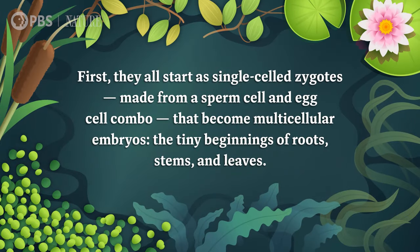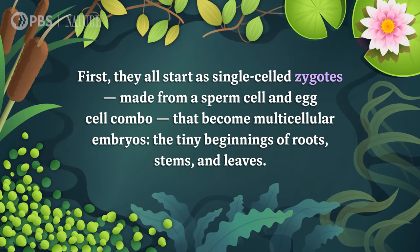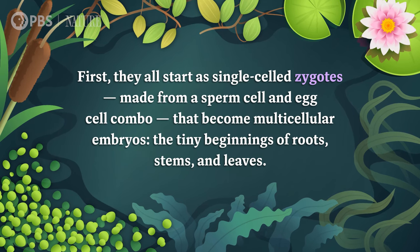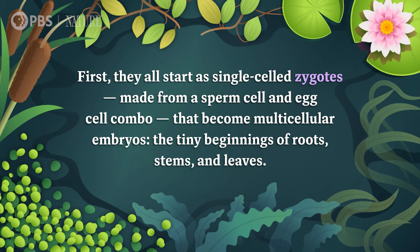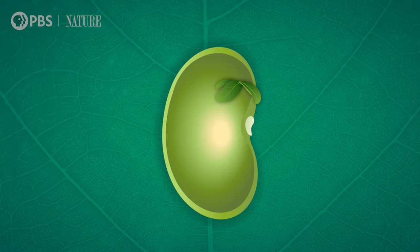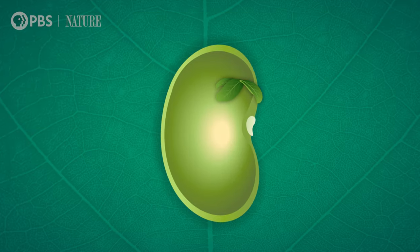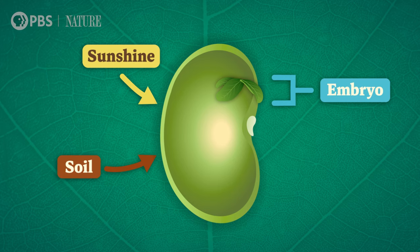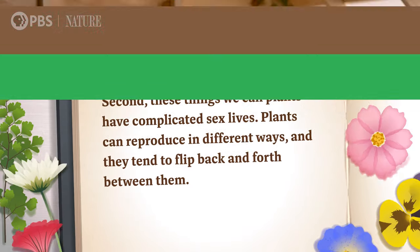It's like how all people are technically related if you go back far enough in history. And these algae descendants all have two things in common. First, they all start as single-celled zygotes, made from a sperm cell and egg cell combo, that become multicellular embryos — the tiny beginnings of roots, stems, and leaves. If you've ever looked close up at a seed or a bean, you've seen a capsule that contains an embryo. Given soil, sunshine, and half a chance, it can sprout into a tiny version of a grown-up plant.